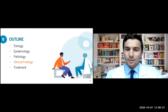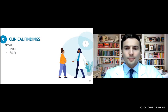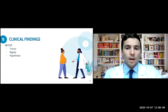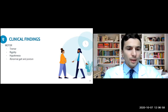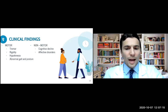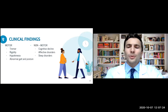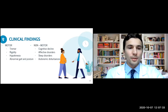Now let's talk about clinical findings. We know about resting tremor, cogwheel rigidity, increased resistance to passive movements, and hypokinesia — which is the most disabling feature of Parkinson's disease — characterized by slowing of voluntary movements and reduction of automatic movements like arm swinging. We also have abnormal gait and posture. Non-motor features include cognitive decline, executive dysfunction, personality changes, apathy, depression, anxiety, sleep disorders like REM behavior disorder, and autonomic symptoms like urge incontinence and constipation.